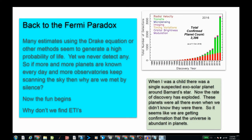Let's go back to the Fermi paradox now. Many estimates using the Drake equation or other methods seem to generate a high probability of life, yet we never detect any. So if more and more planets are known every day, and more and more observatories keep scanning the sky, then why are we met with silence? Now the fun begins. Why don't we find ETIs? When I was a child, there was a single suspected exosolar planet around Barnard's star. Now the rate of discovery has exploded. It's important to recognize that these planets were always there. It's not like we just discovered them and they came into existence, and therefore they haven't had time to communicate with us. We're now learning the universe is really swarming with planets, which makes the Fermi paradox even worse.